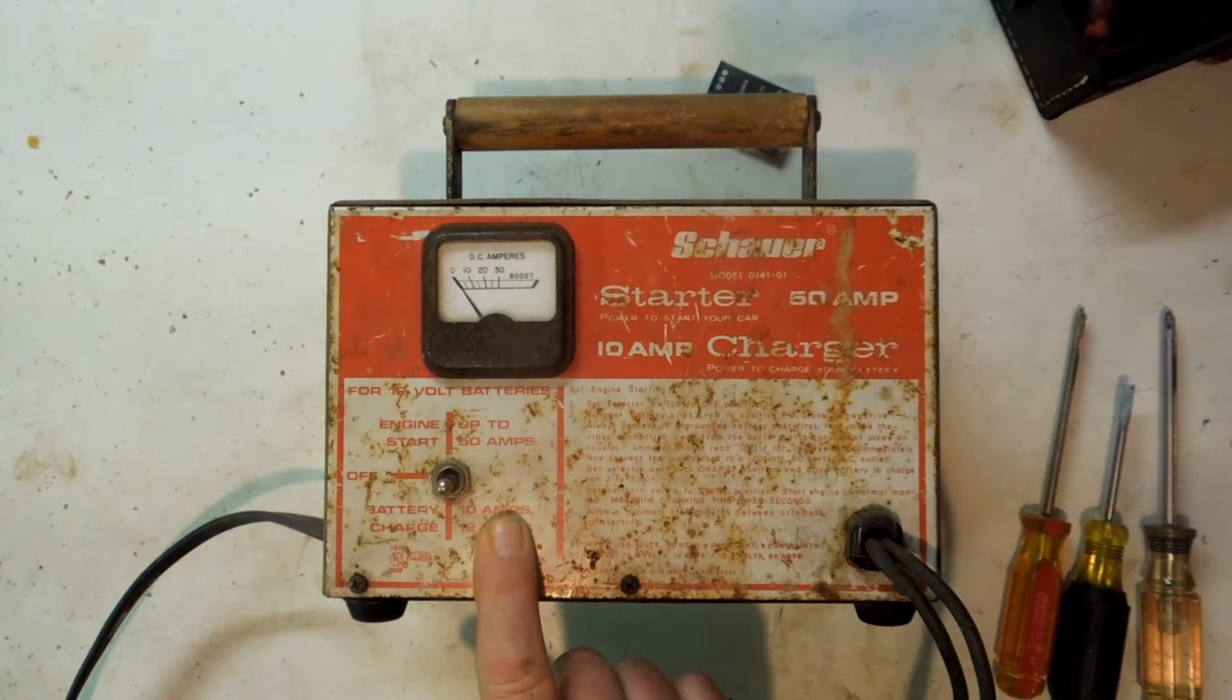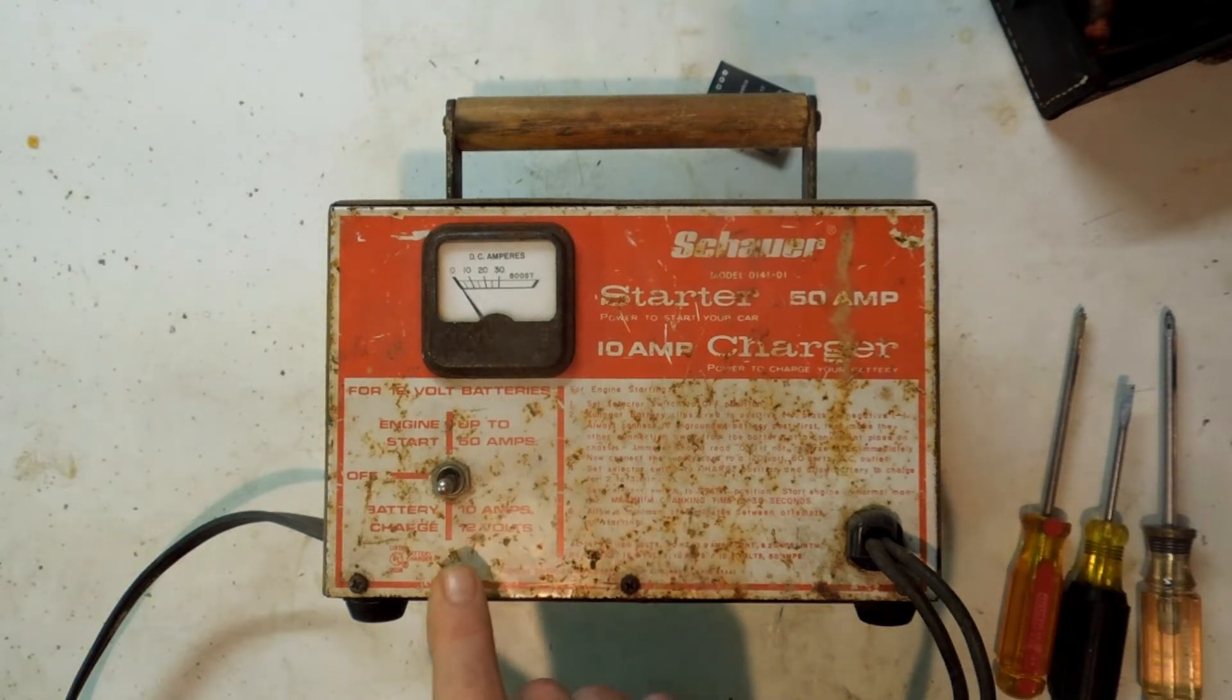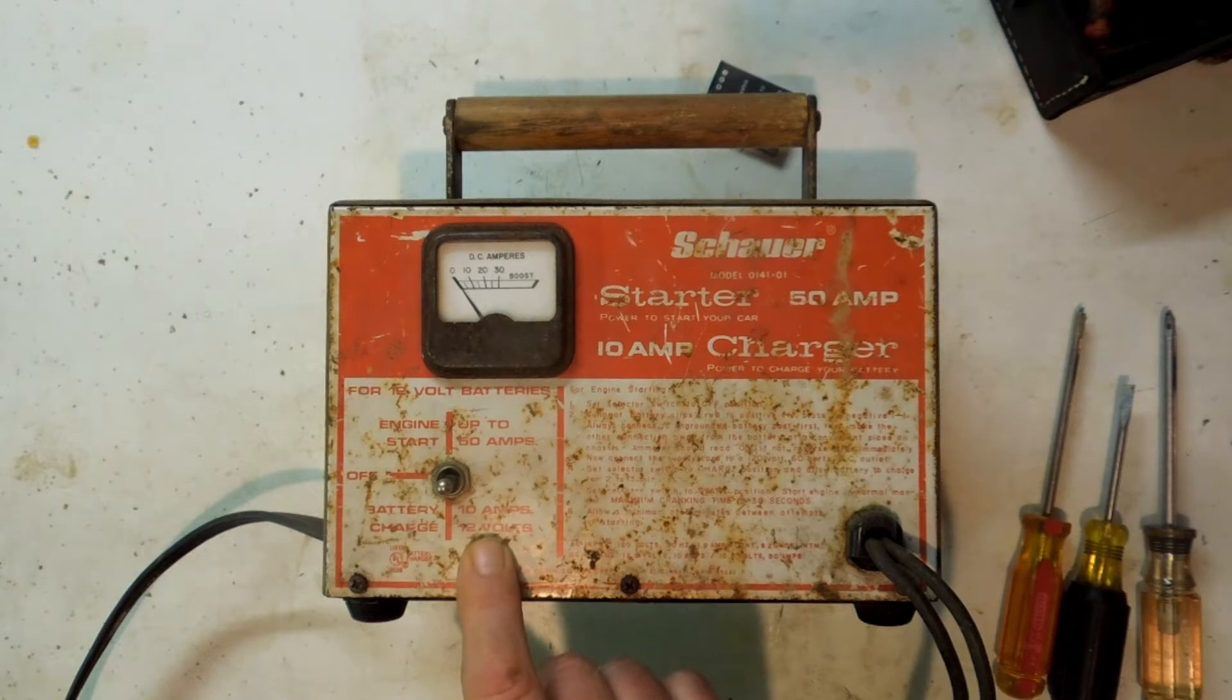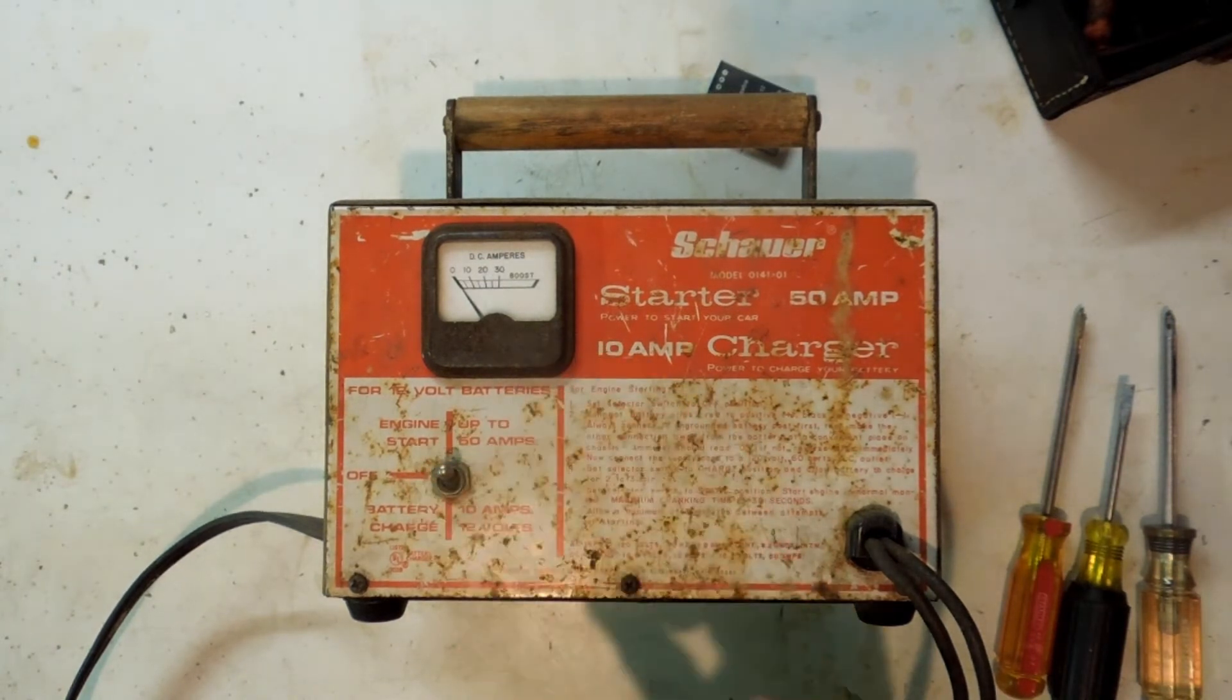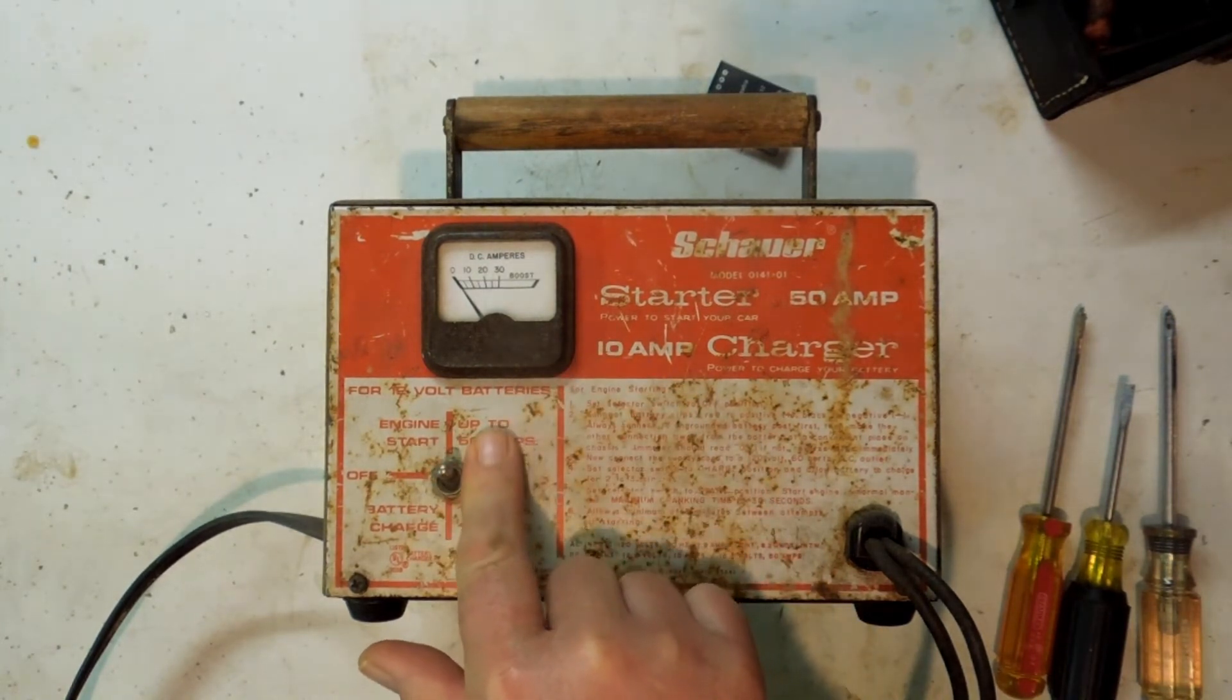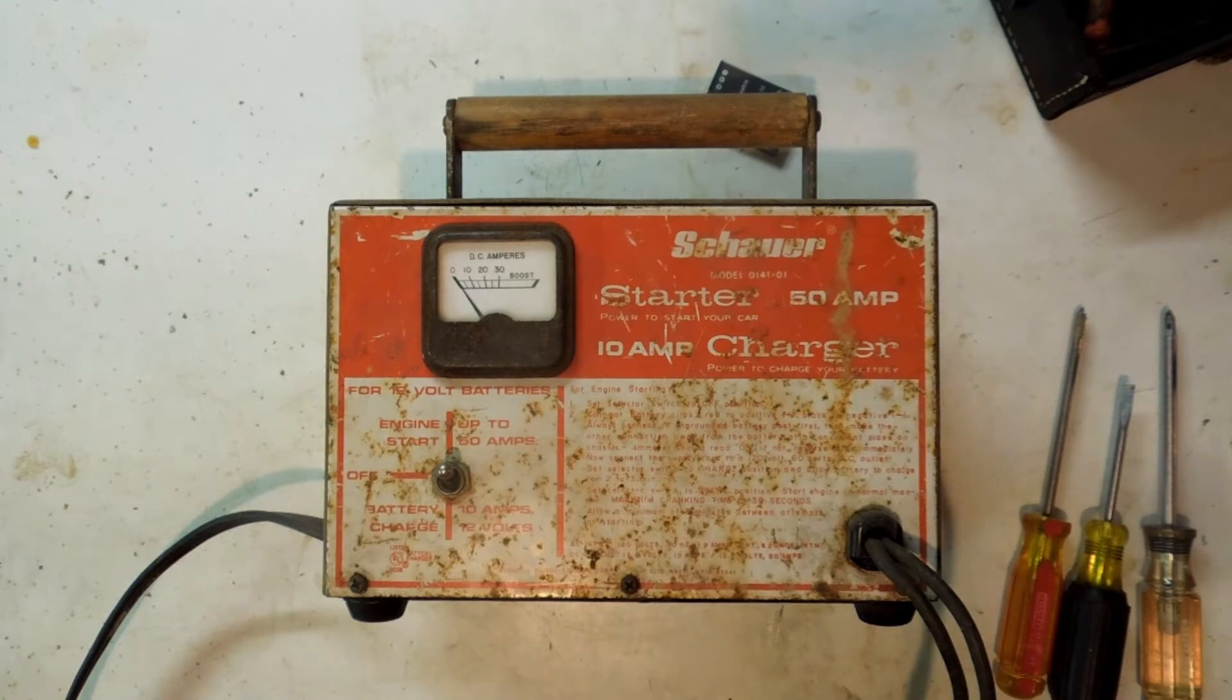For 12 volt batteries. Now it says battery 10 amps charge 12 volts if you flip the switch down. Center position's off, up, it puts it in engine start and it's up to 50 amps. It'll start a lawnmower. It won't start your car.